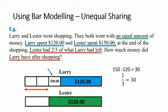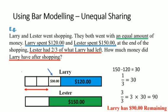So one-third would be equal to $30. To obtain the amount of money Larry had remaining, we need to get three-thirds of this amount. That is to say, three-thirds would be equal to 3 times $30, which is $90. This concludes our problem — Larry has $90 remaining.